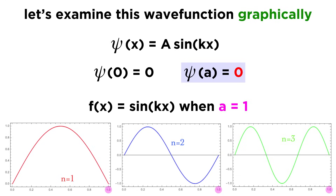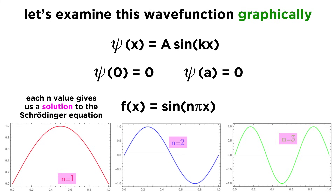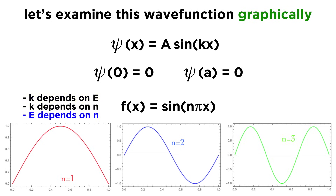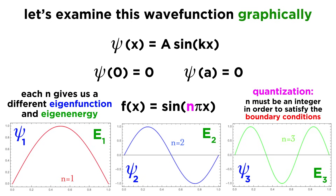Setting a equal to one and examining sine of kx — which is sine of n·pi·x — for different integer values of n, each n gives a solution to the Schrödinger equation where the wave function equals zero at both boundaries. Since k depends on energy and k depends on n, energy depends on n. Each value of n gives a different eigenfunction and a different eigenenergy. The requirement that n be an integer is what imposes quantization on this system.